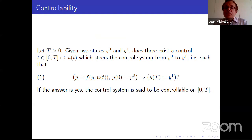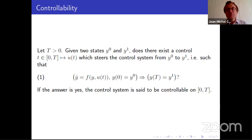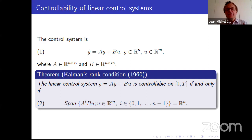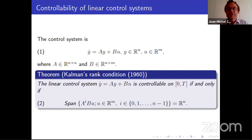There is another property of a control system which is controllability. You want to know if it is possible to move from y0 to y1. For a linear system y-dot equals Ay plus Bu, you have this very important result from 1960: the Kalman rank condition, which says the linear control system is controllable on [0,T] if and only if the span of A^i B u, where u is in R^m and i is between 0 and n-1, equals all of R^n. We stop at n-1 because of Cayley-Hamilton. And you see this condition does not depend on time — for a linear system, if you can control it in a million years, you can control it in one second.